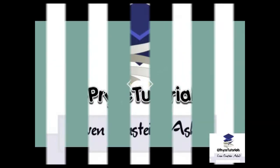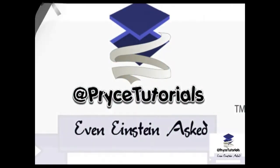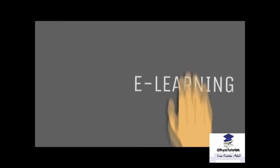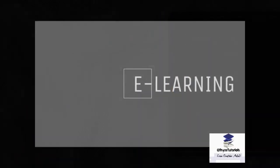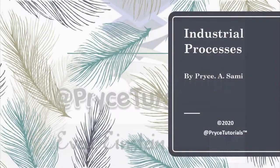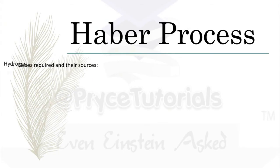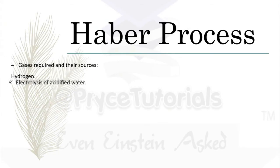Hello guys, in this lesson we're looking at the Haber process. The Haber process is used to manufacture ammonia.